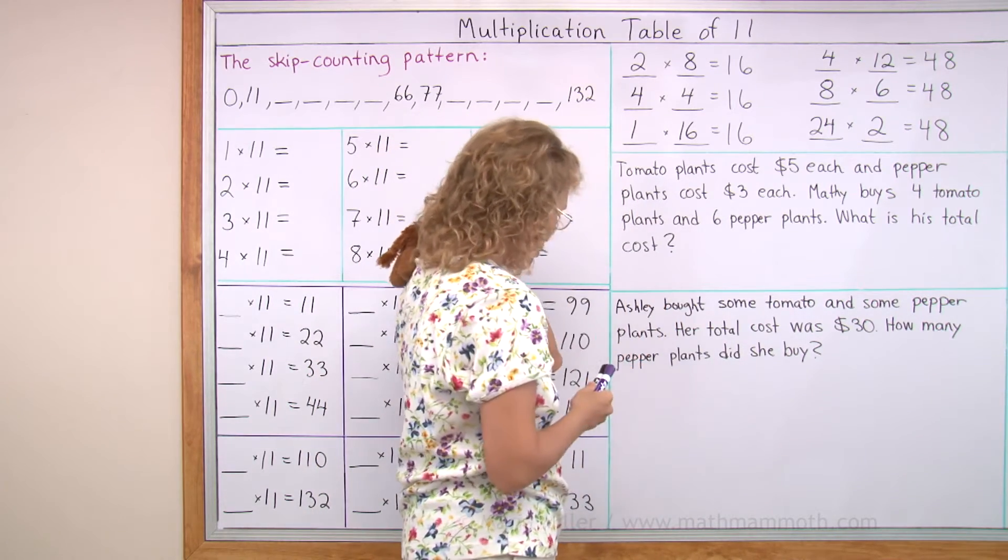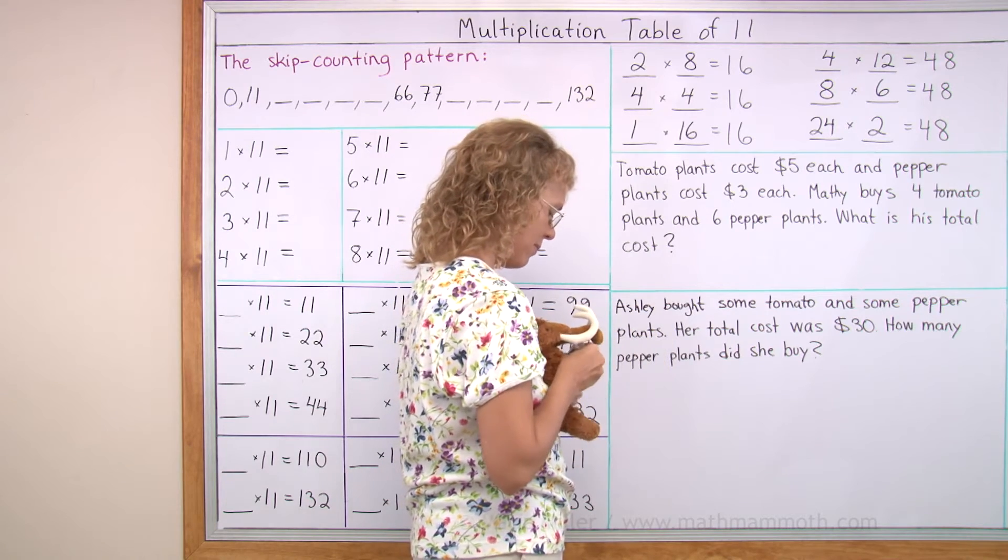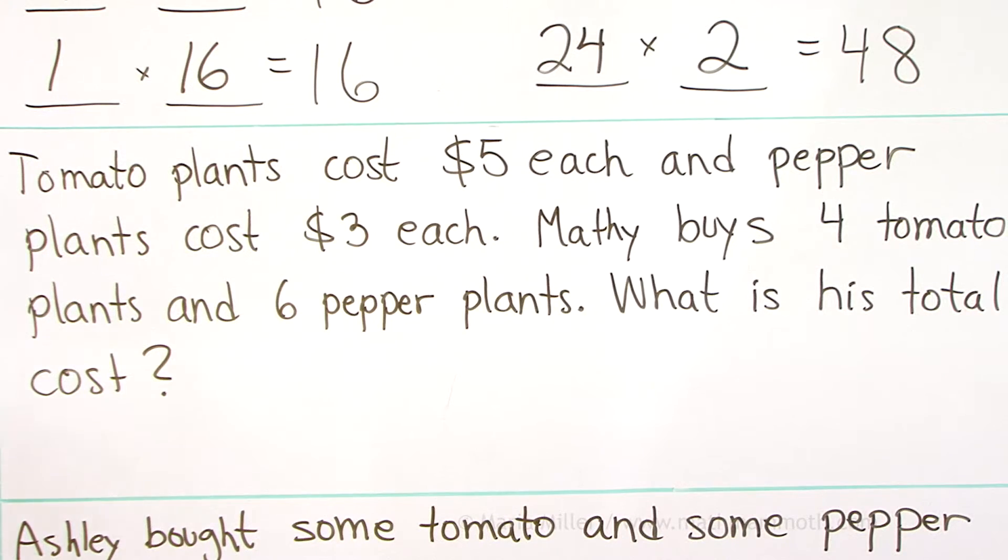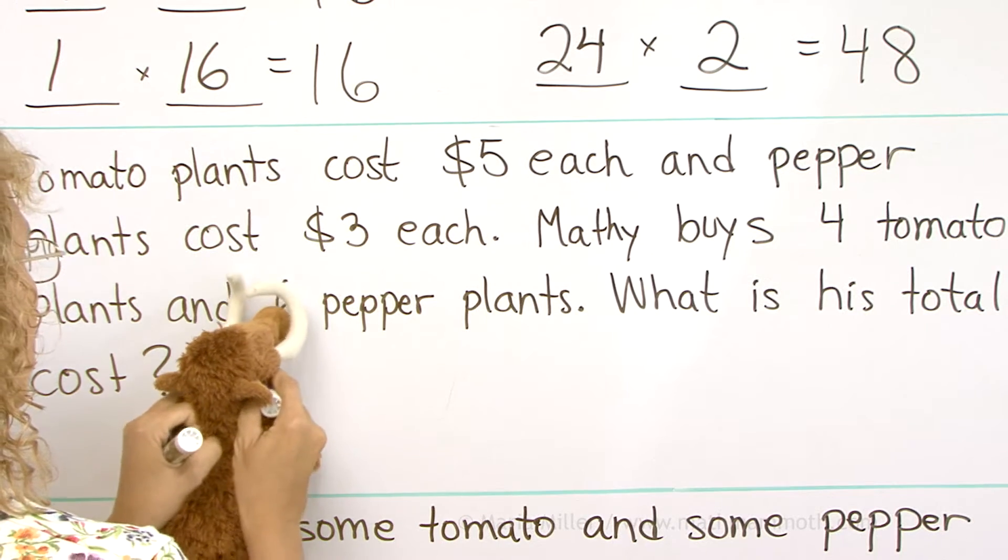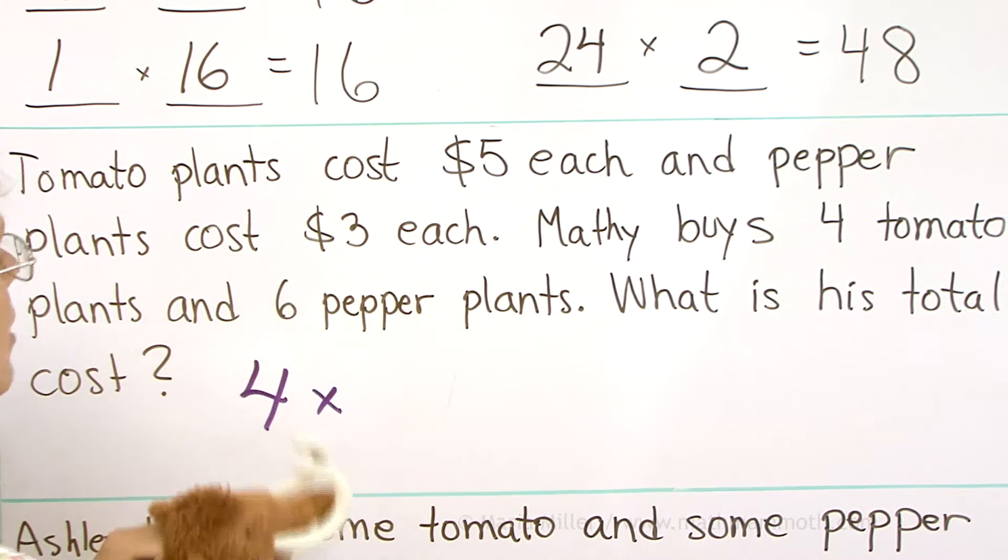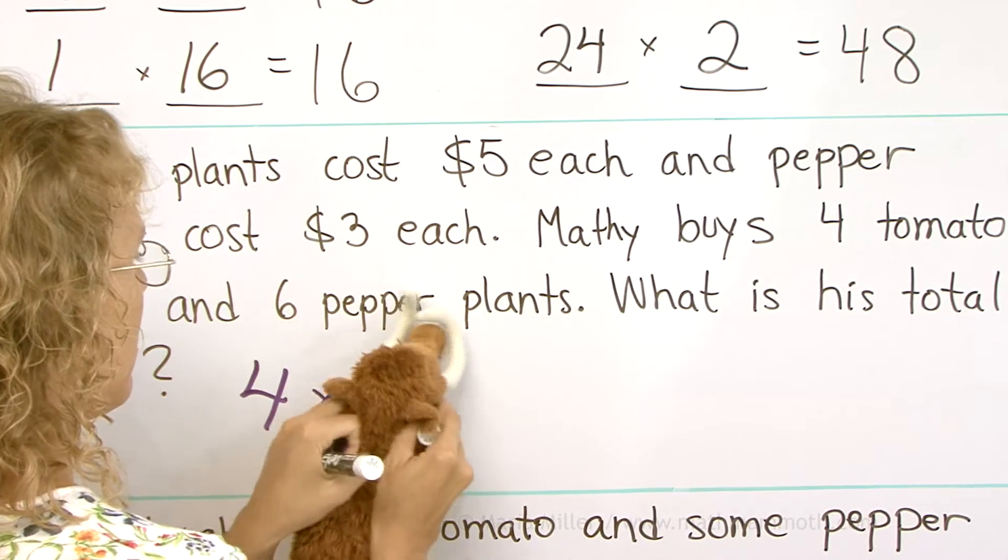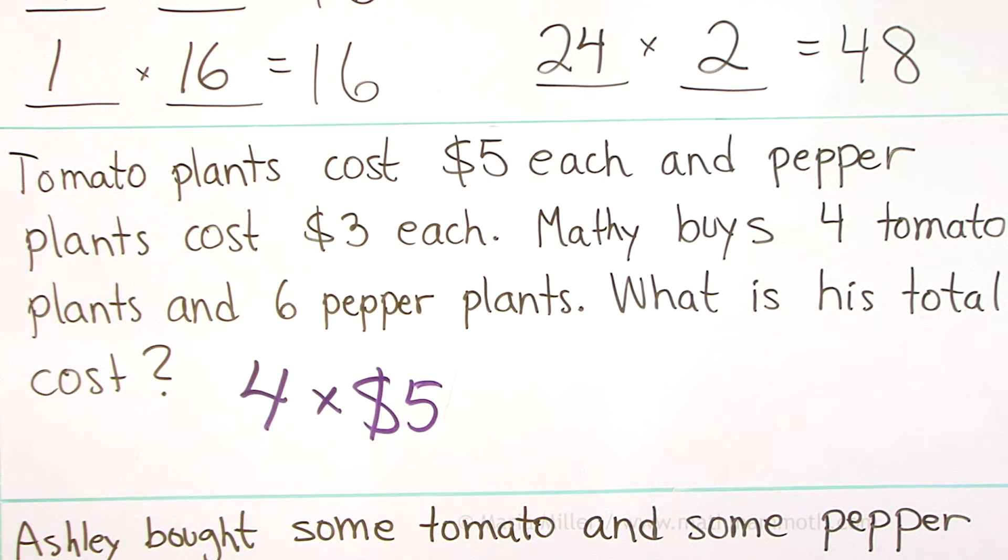How about Matthew, can you tell me? Can you write it? In purple. Matthew buys 4 tomato plants. Let's write the cost of those. 4 tomato plants, right? Yes. And then? Exactly. 4 times $5 for the tomato plants.